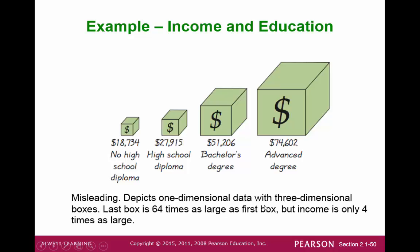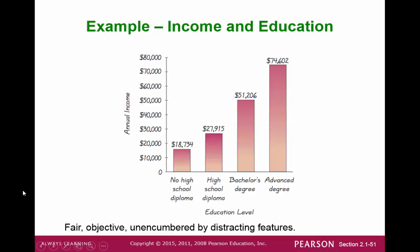Another representation of the same data set would be using volumes. If we take a look at volumes, the last one with the advanced degree seems really huge — a lot bigger — but in reality it's only about four times as large. So the volume amplifies your values. Really, to keep it simple, if we just look at a simple bar graph, it's the best thing to represent these values. We can see that for somebody with no high school diploma compared to somebody with an advanced degree, if you stack up these bars, it looks like it's one fourth of the size — and that's exactly what the data values are telling us.